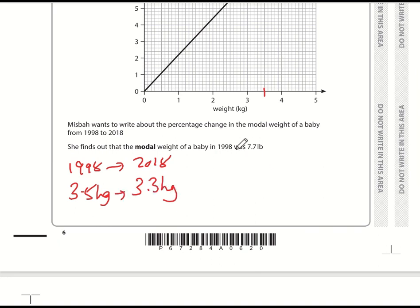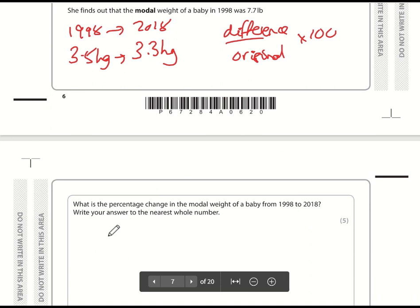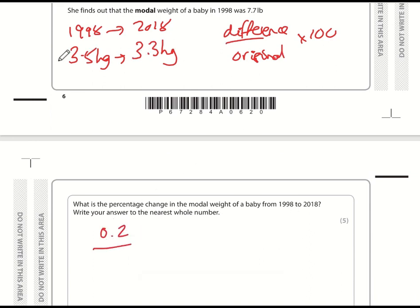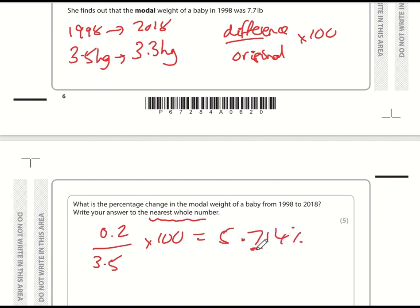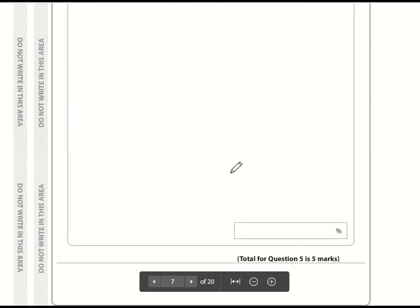To calculate percentage change: it is the difference divided by the original, multiplied by 100. The difference is 0.2 kg. So 0.2 divided by 3.5 times 100 gives 5.714%. To the nearest whole number — since the next digit is 7, we round up — that is a 6% decrease.